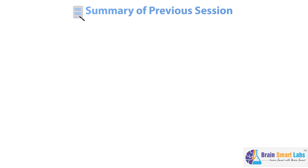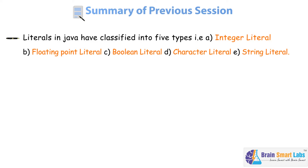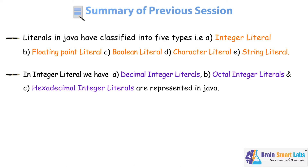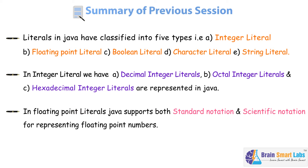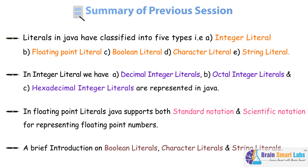Let us quickly jump into what we did in our previous session: understanding literals and operators. We saw literals in Java can be classified into five types — integer literal, floating point literal, boolean literal, character literal, and string literal. We saw representations of integer literals: decimal, octal, and hexadecimal. In floating point literals, Java supports both standard notation and scientific notation. We also covered boolean, character, and string literals, which play a vital role in any Java program.